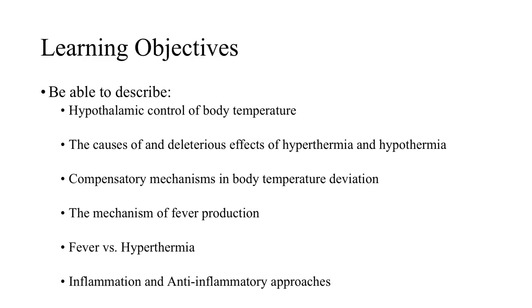To start out with, I would like you to understand the hypothalamic control of body temperature, how the body deals with variations from homeostasis in things like hyperthermia and hypothermia. And in those ways of dealing with it, you'll see compensatory mechanisms. And then we'll end with fever production, the mechanism of which, and then just briefly contrasting fever and hyperthermia. And we'll end with inflammation and targeting anti-inflammatory modalities.